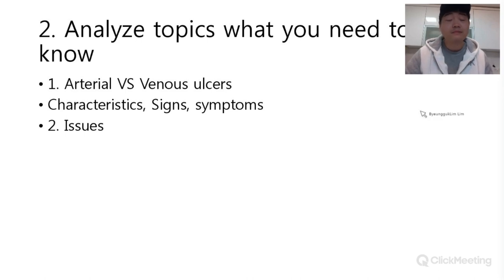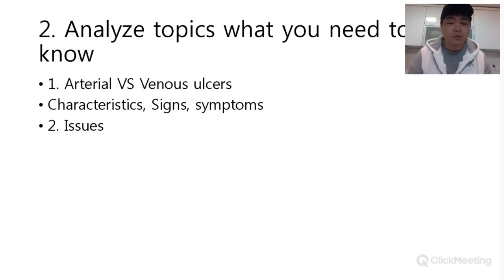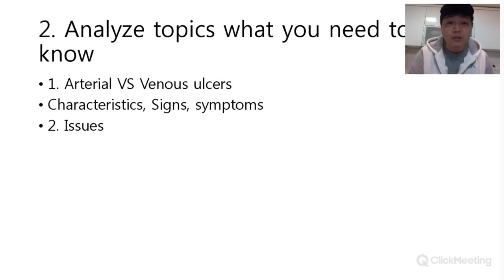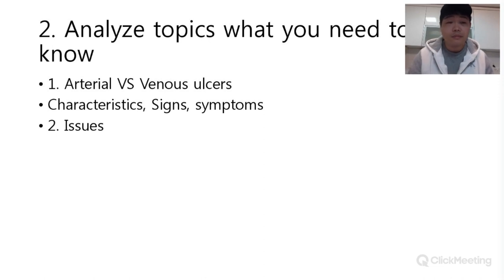The second advice: analyze the topics to understand what you really need to know. Just choosing topics and studying the materials you have doesn't really help. You should think about what you really need to know — especially for each topic. For example, if you're studying artery or venous ulcers, you should know the characteristics, signs, symptoms, and what distinguishes artery from venous — because questions ask you to distinguish between them.